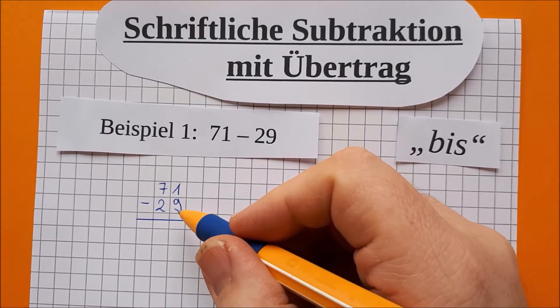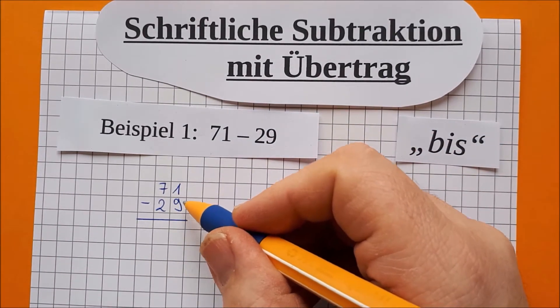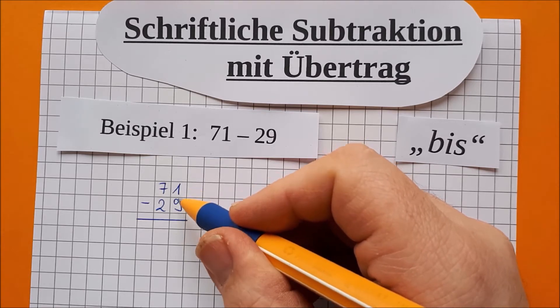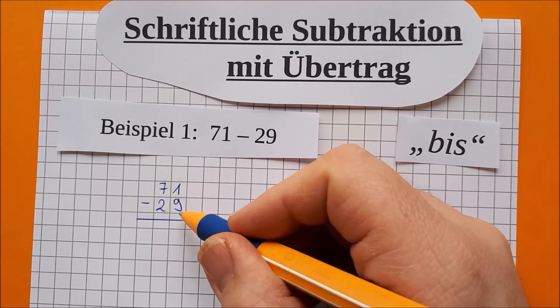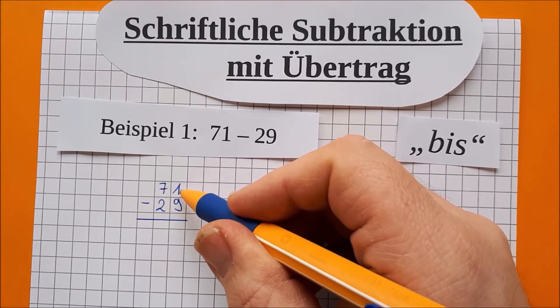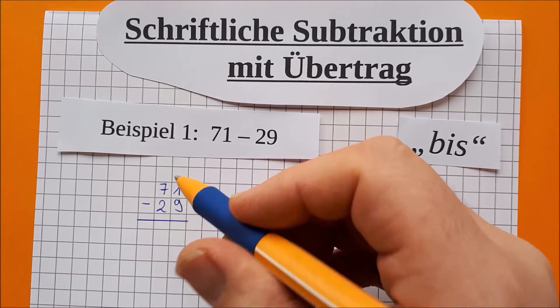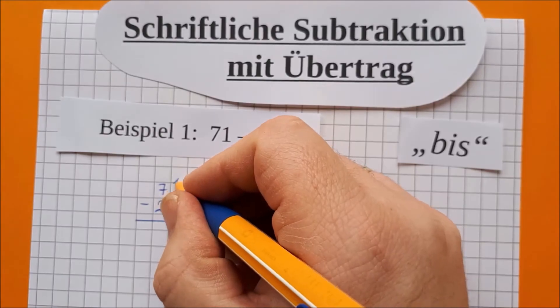Und jetzt werdet ihr merken, wenn wir wie bisher rechnen, 9 bis 1. Ja, das geht gar nicht, denn die 1 ist ja kleiner als die 9. 9 bis 1. Und deswegen tun wir hier oben in den 1er, tun wir 10 dazu. Das wird dann eine 11.